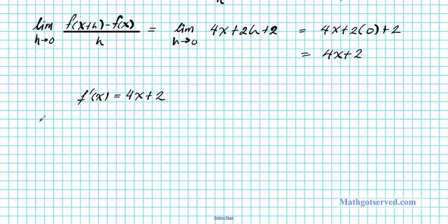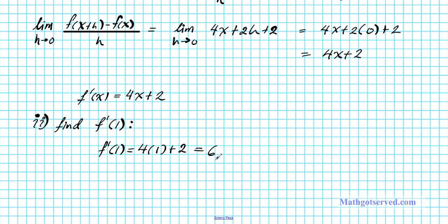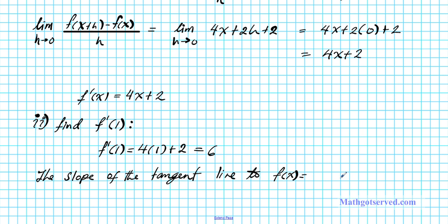Now this is step 1 complete. Step 2: we want to find the derivative when x is 1. f prime of 1 is simply 4 times 1 plus 2, which equals 6. The significance of this answer: the slope of the tangent line to f of x equals 2x squared plus 2x at x equals 1 is 6. So you have a line with a slope of 6 being tangent to the function at x equals 1.